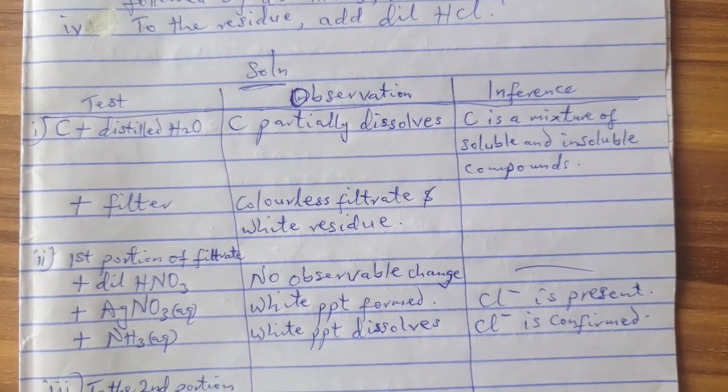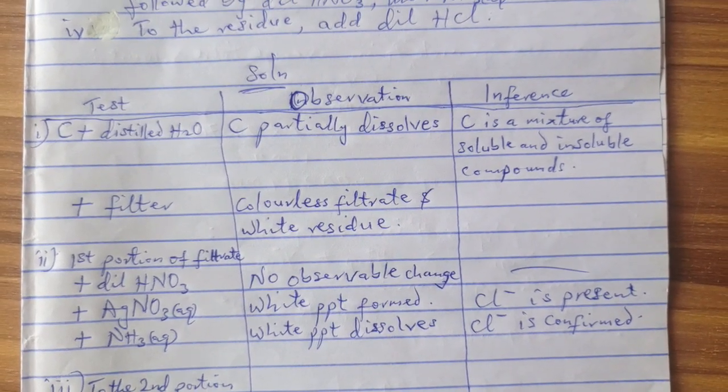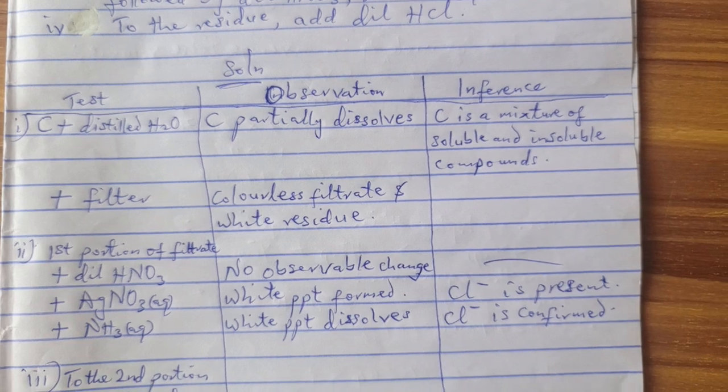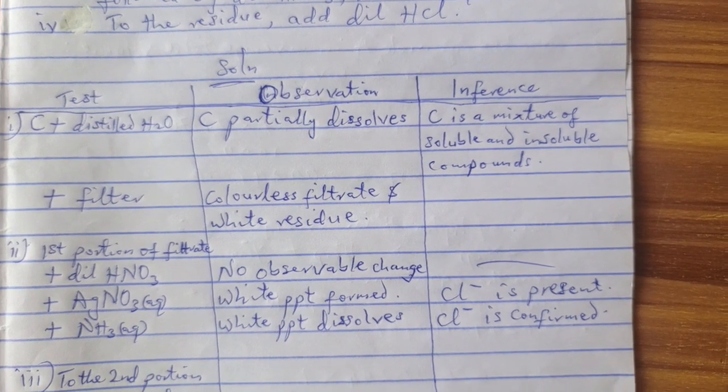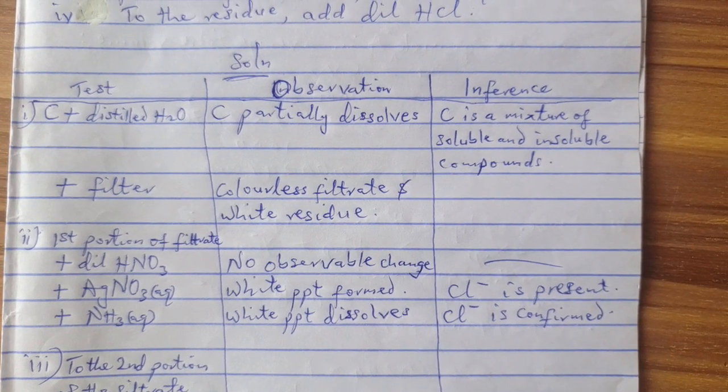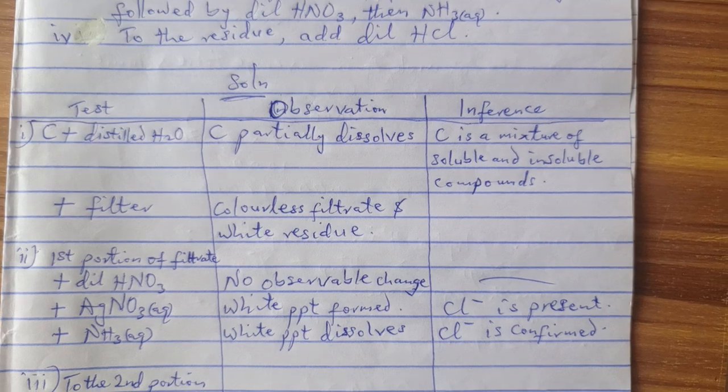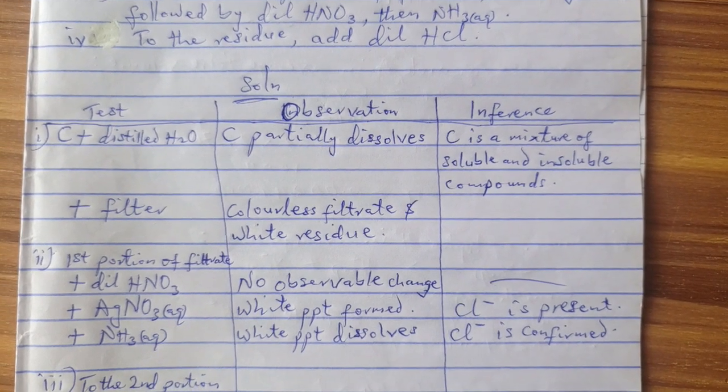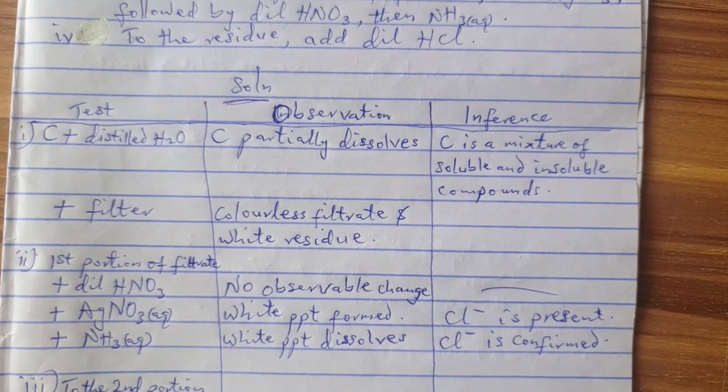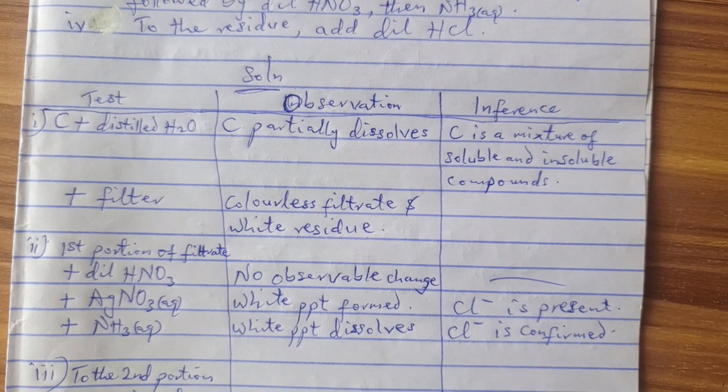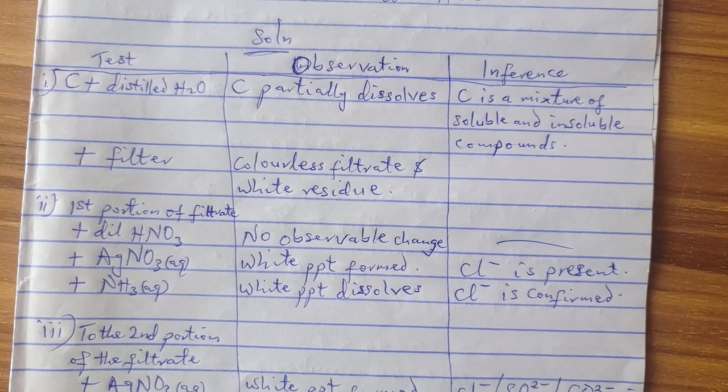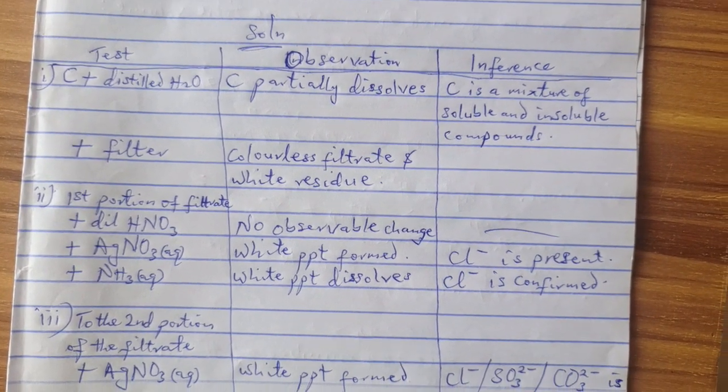Now the next point they said you should do what? You should add to the first portion dilute HNO3. When you add it, no observable change. You will not see any change there. So you just tell them no observable change under observation. When you go to inference, leave it a dash there. Since there is no observable change under observation, no need to write anything under inference. Now go to the next step.